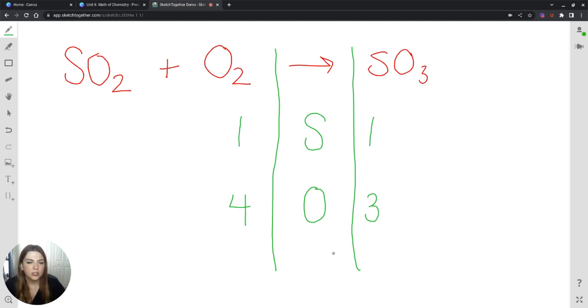Now using your knowledge of math, you should know the least common multiple. Four and three, the smallest number that you can get from them and their multiplication tables is 12. So my four has to turn into a 12 by multiplying by three. And my three has to turn into a 12 by multiplying by four. I know that sounds a little crazy, but here we go. If I put a four right here, I will now have four sulfurs and then four times the three would give me 12 oxygens.